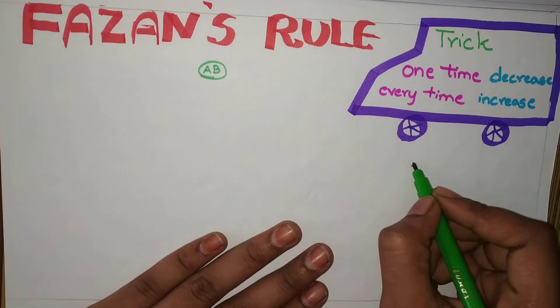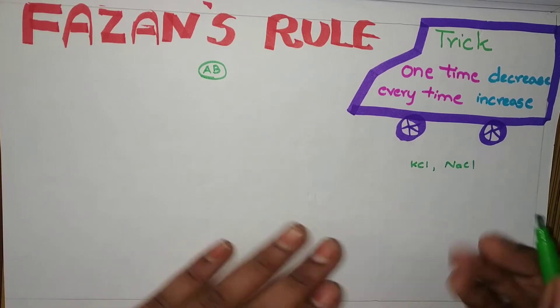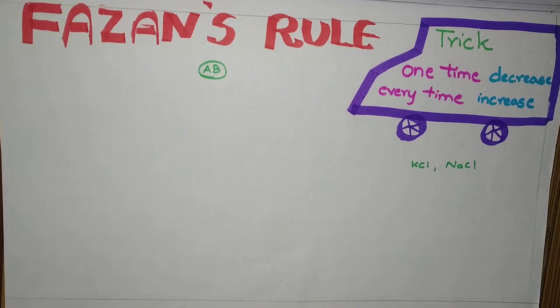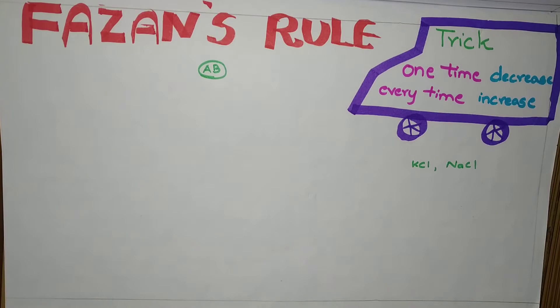In examinations, you will be given like KCl, NaCl and which has more covalent character. Like this questions are given, there you use Fazan's rule, very important. Here the trick is, one time decrease, every time increase. That's it, repeat this, one time decrease, every time increase.